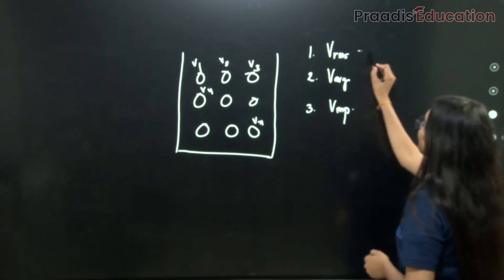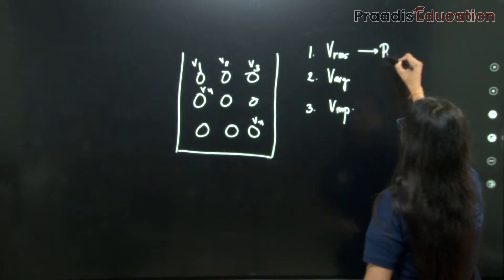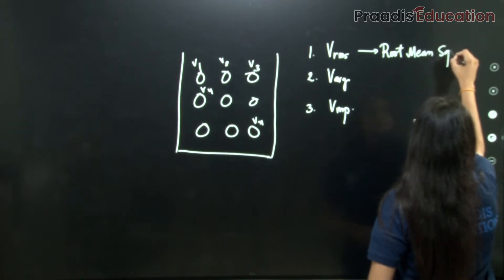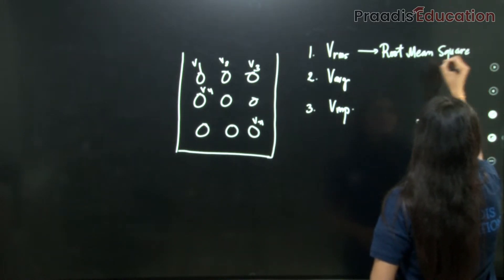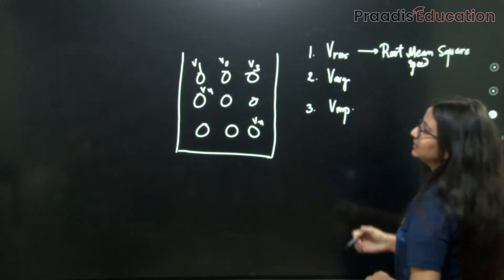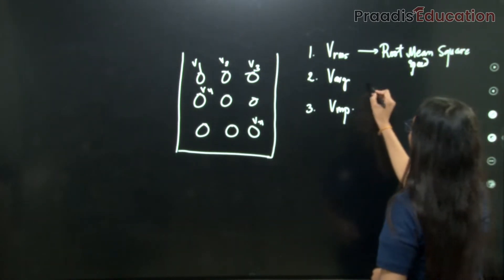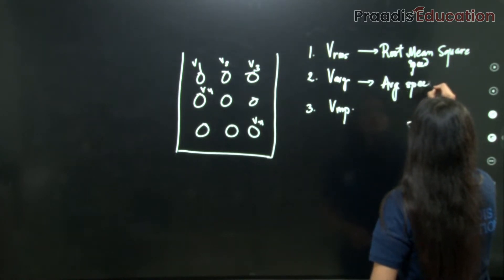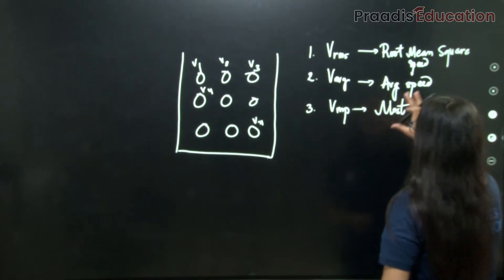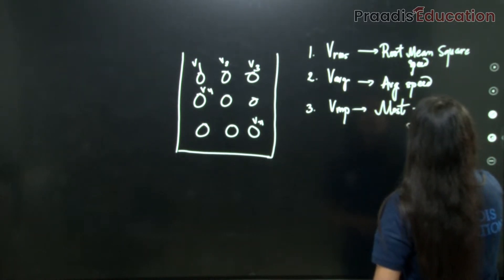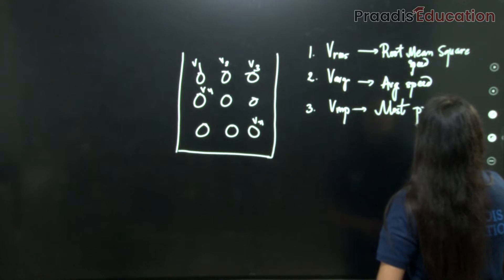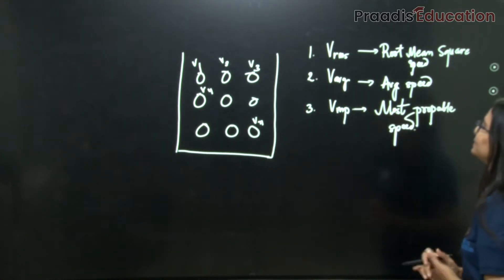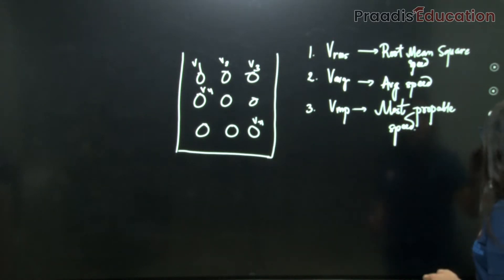v_rms is the root mean square speed. v_average is the average speed of the gas molecules. v_mp is the most probable speed. So these are the three speeds we will study.